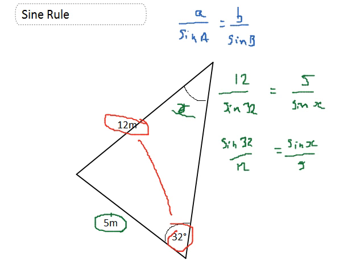I can take the 5 and I can get rid of it off this right-hand side. So I'm going to end up with 5 lots of sine 32 divided by 12 equals sine of X. Now that's great, I'm going to work that out.